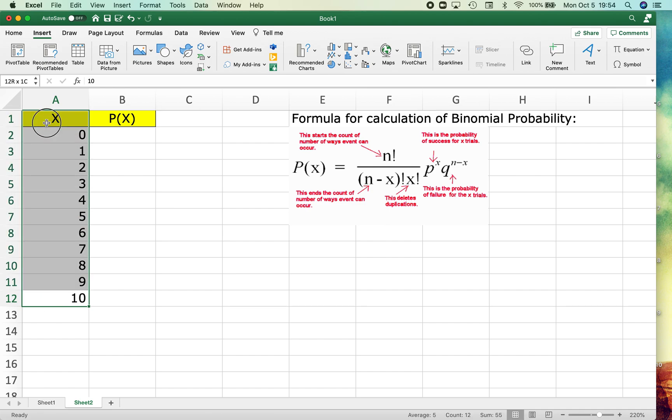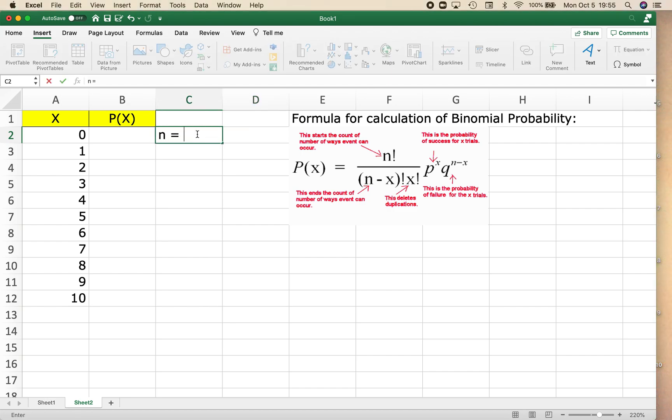So in this case, I am doing an experiment where I am conducting 10 trials. So in this case, n is going to be equal to 10. Also, for this particular binomial that I'm looking at, my probability of success is going to be 0.6, or a 60% probability that I have a successful outcome.